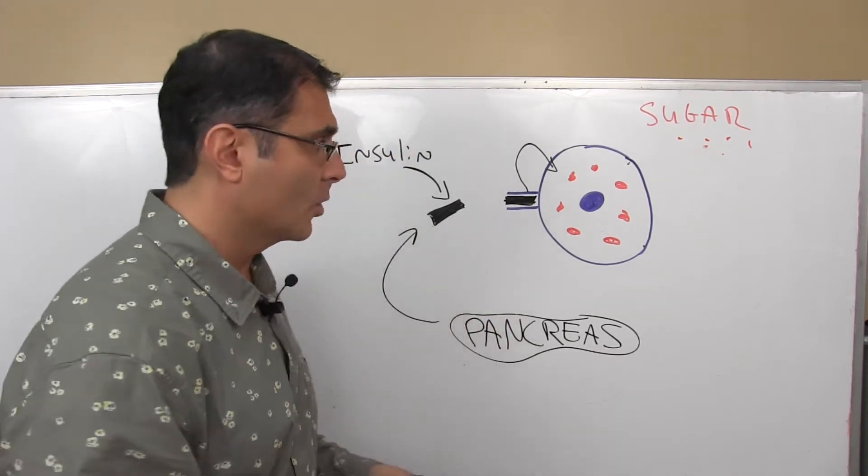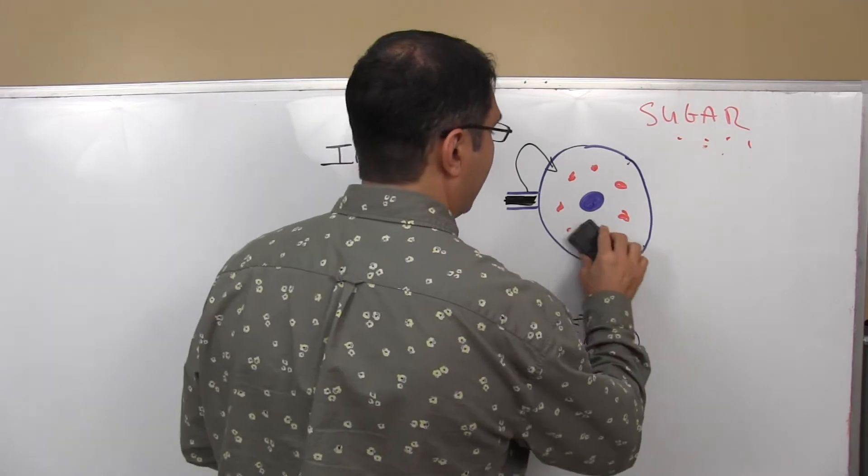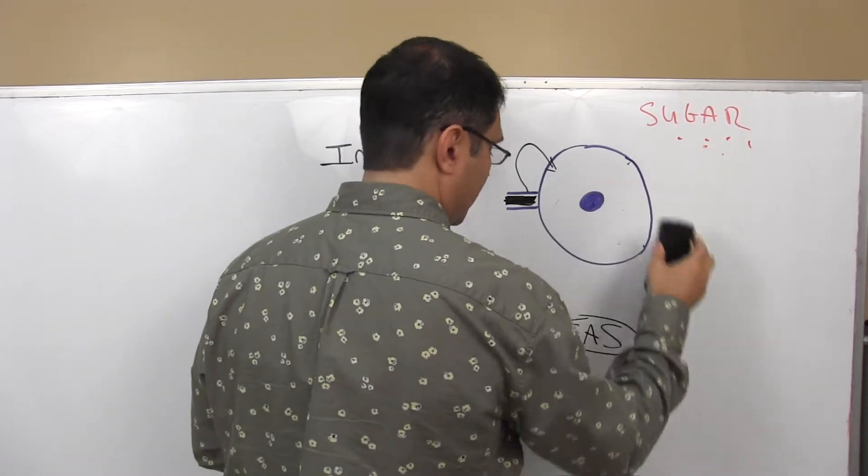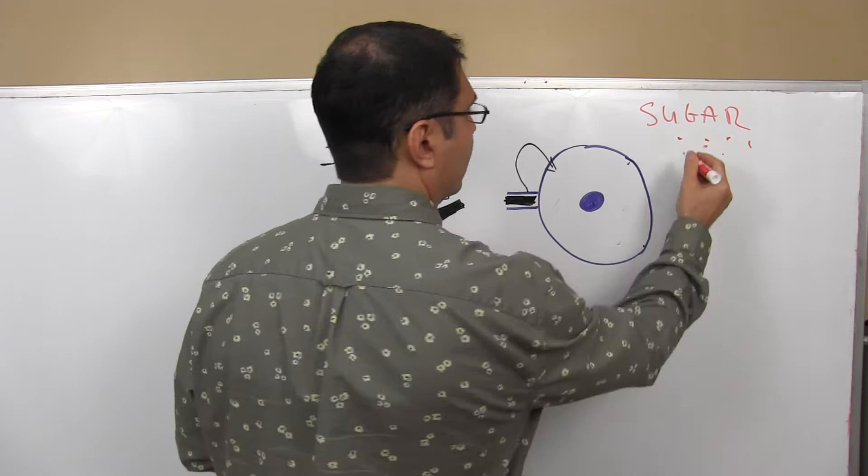What happens in a type 2 diabetic doesn't work that way. What happens in a type 2 diabetic is this. We have a bunch of sugar in the blood. So here's all of our sugar in the blood.